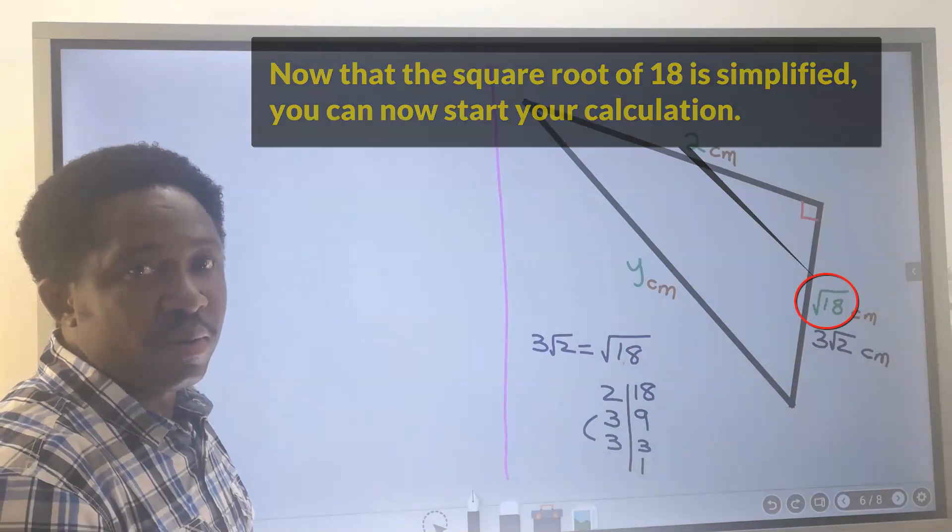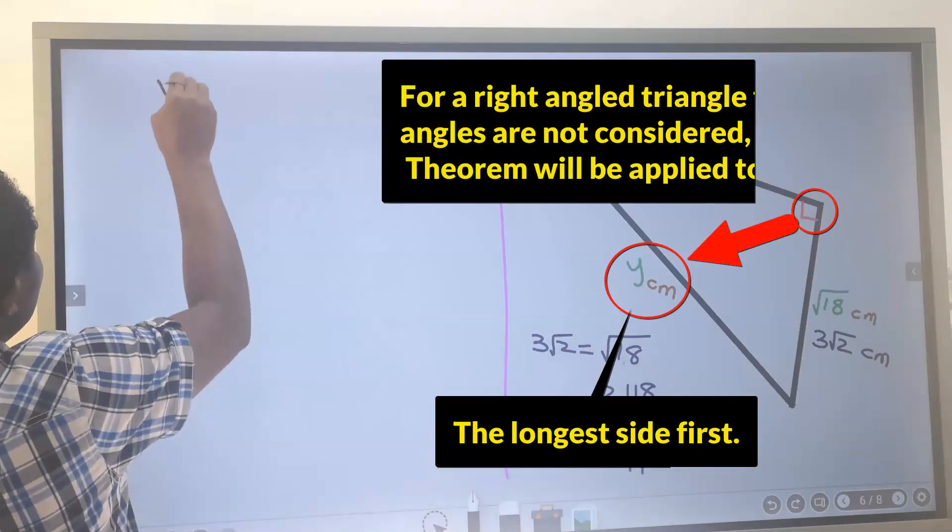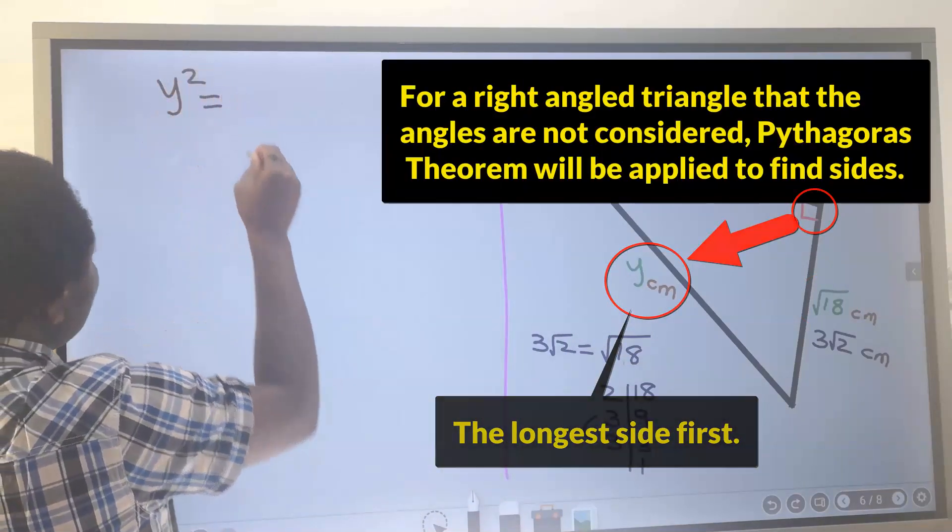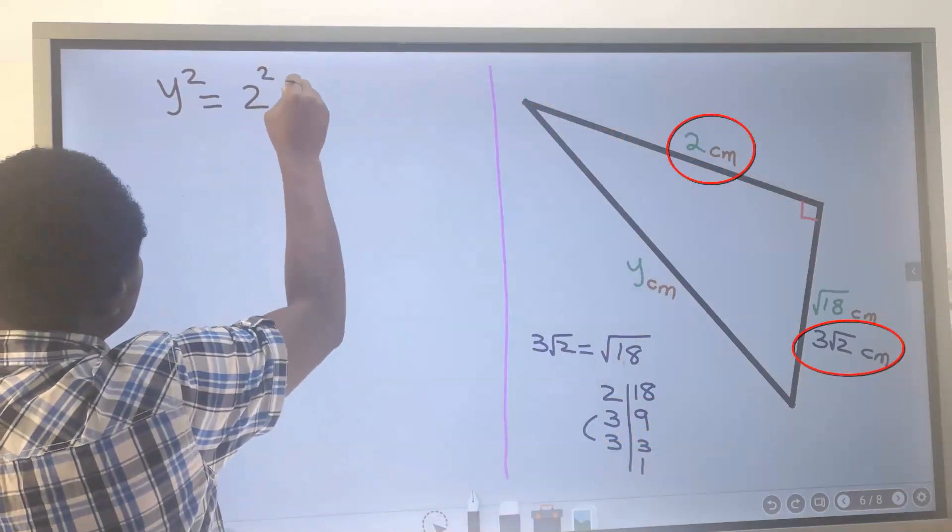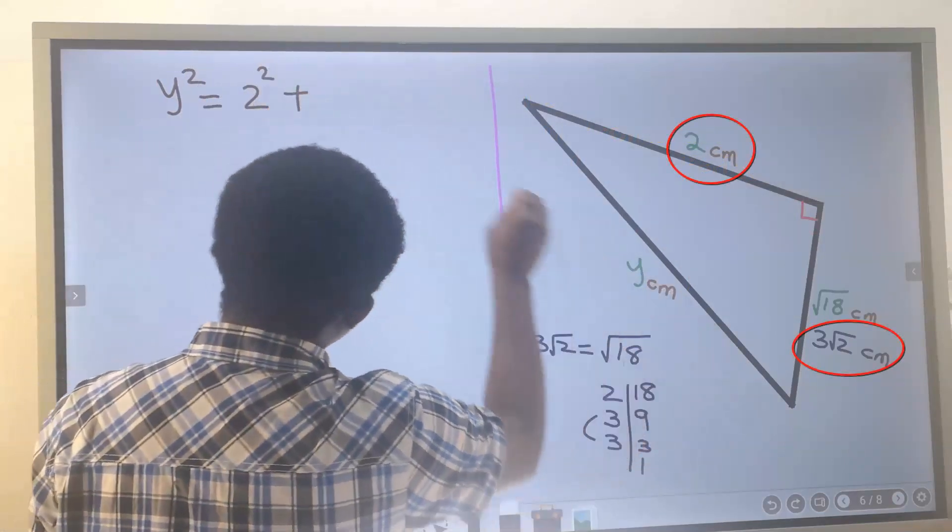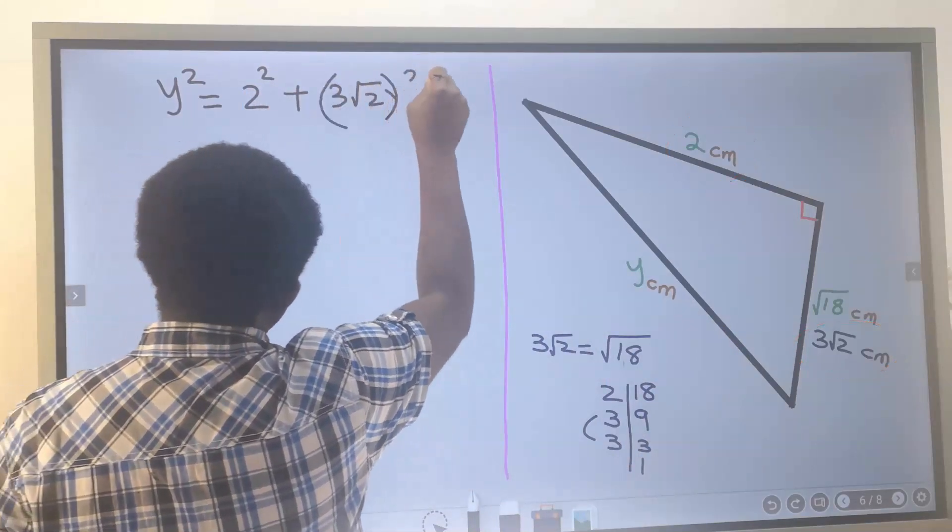Next, according to Pythagoras, I will write the longest side and square it. Next I will sum the both sides remaining, and here I have 3√2 also squared.